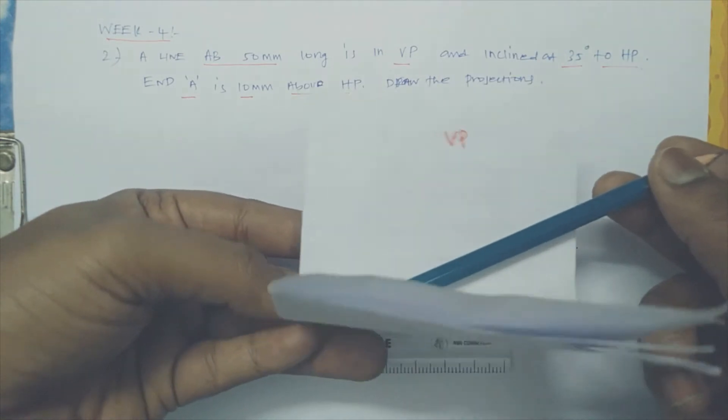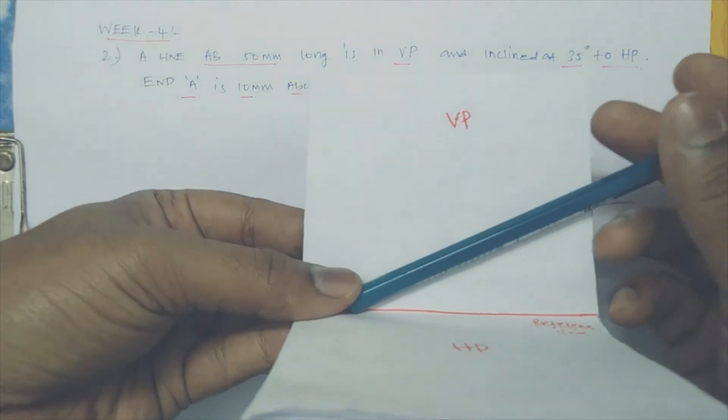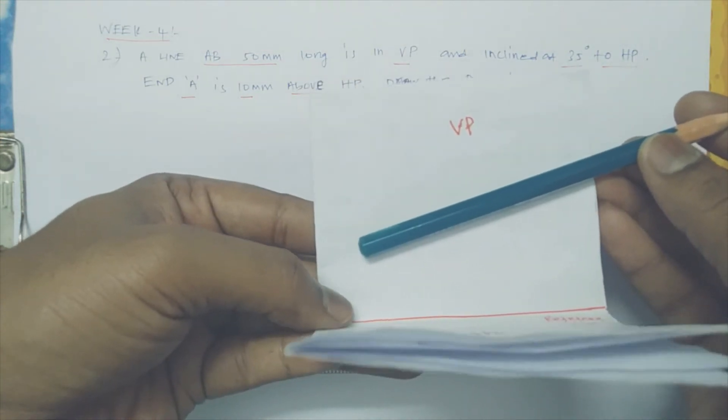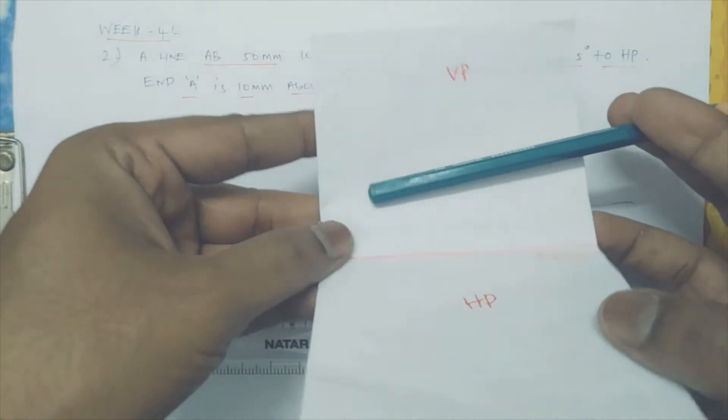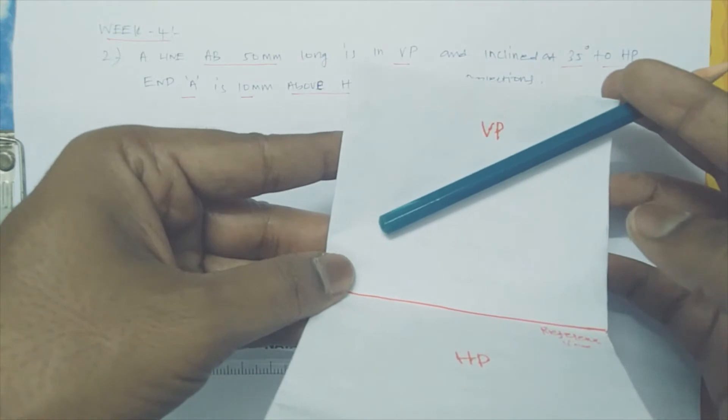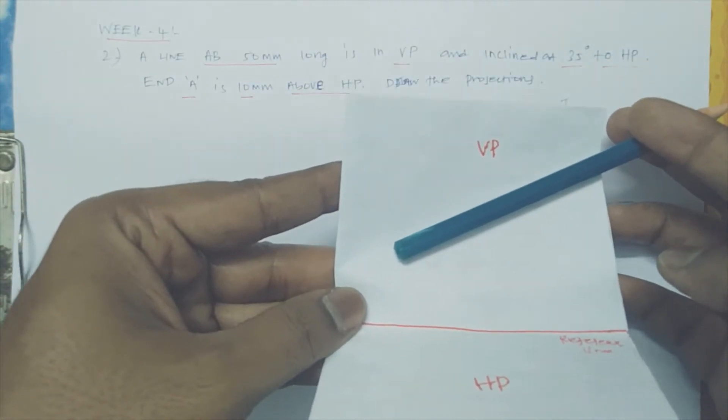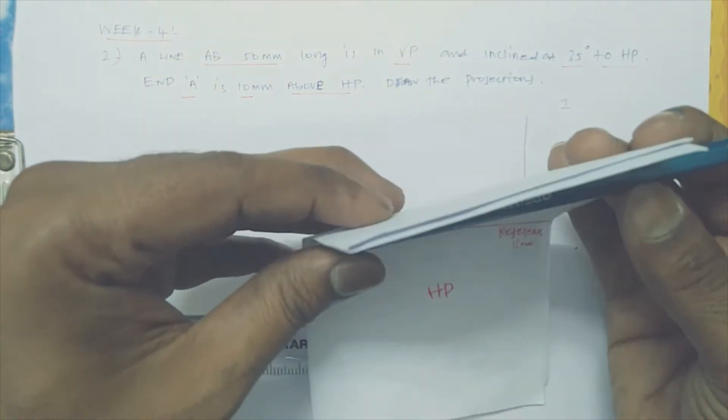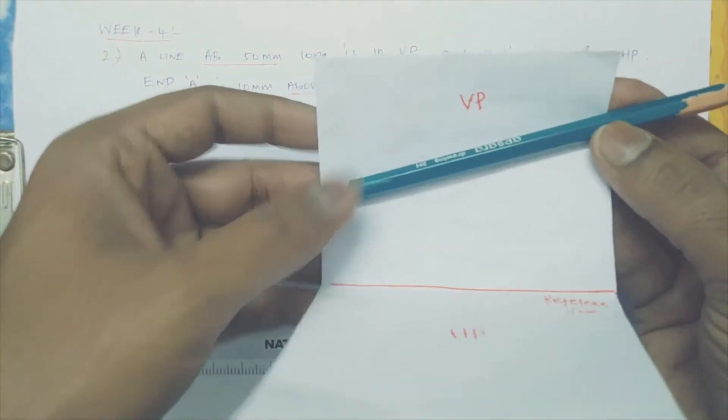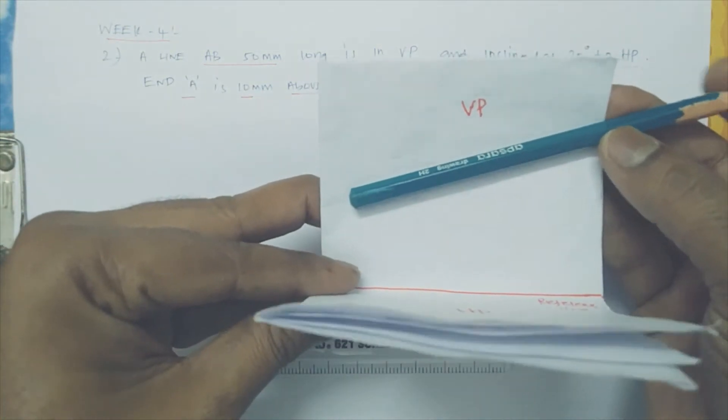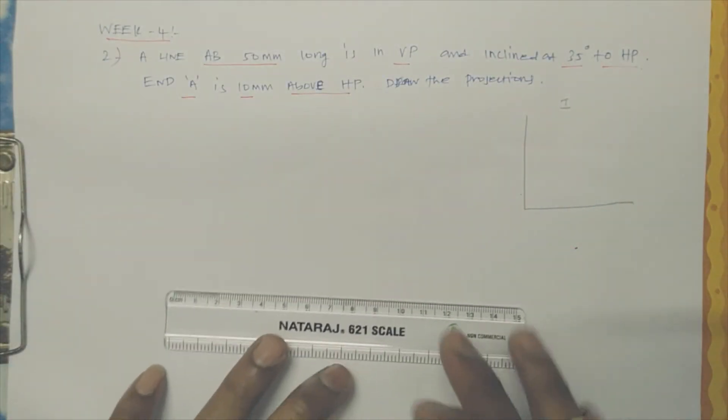The angle between HP and VP is 35 degrees, and end A is 10mm above from the reference line. This position we're just going to project in the vertical and horizontal plane. When you are seeing from the top, you can see the pencil on the reference line. When you are seeing from the front, the pencil will be like this. This position is what we're going to draw.